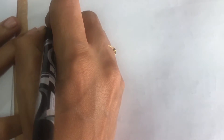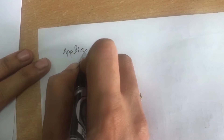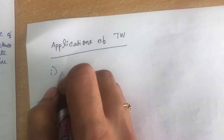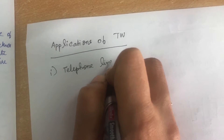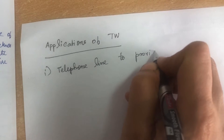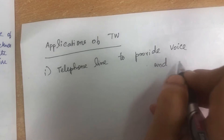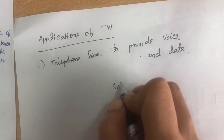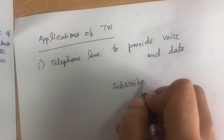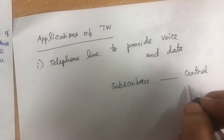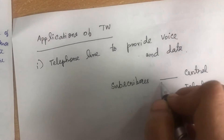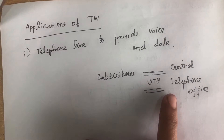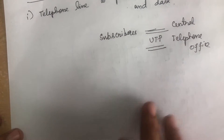Coming to the applications of twisted pair cable, the first application is that it is used in telephone lines to provide both voice and data. For example, to connect subscribers with the main central telephone office, we can use unshielded twisted pair (UTP) cable.